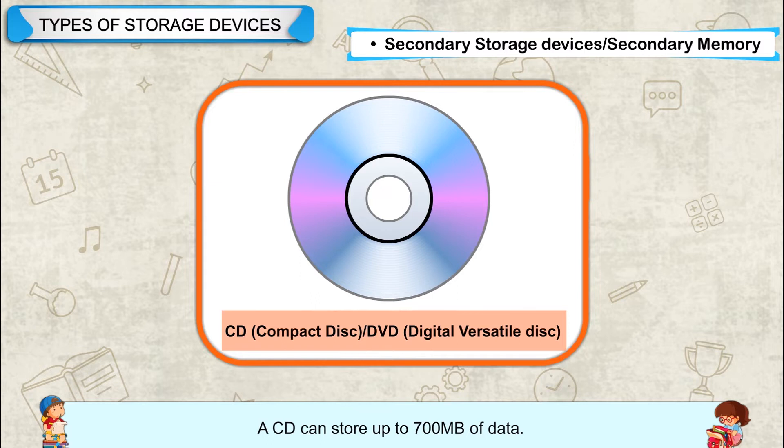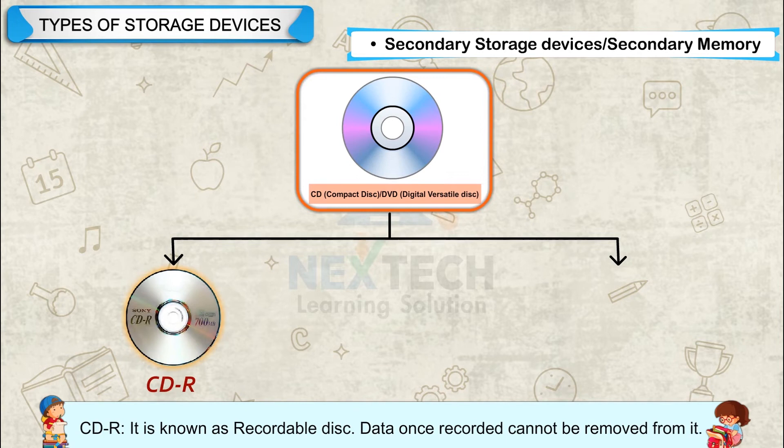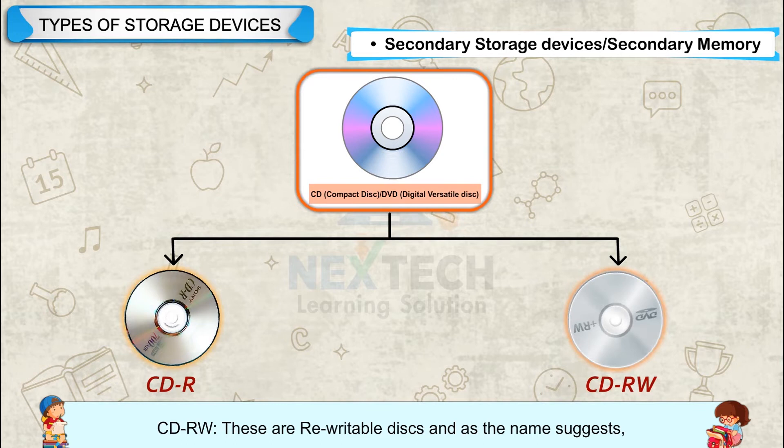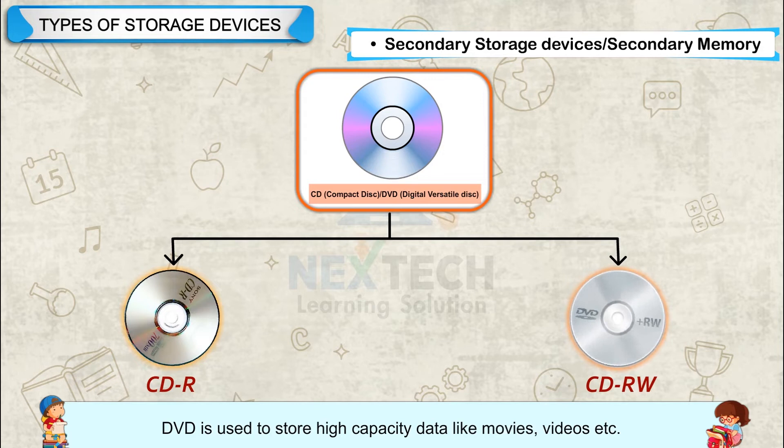Compact disks are of two types. CDR, known as Recordable Disk — data once recorded cannot be removed from it. CDRW disks are rewritable disks, and as the name suggests, new data can be stored on them and the old data can be erased.